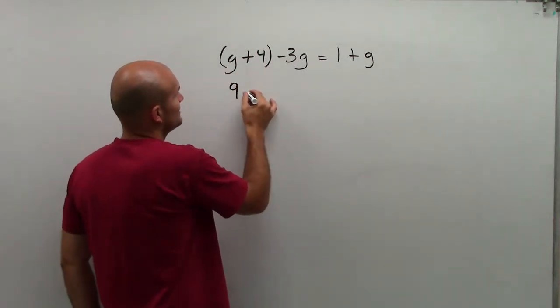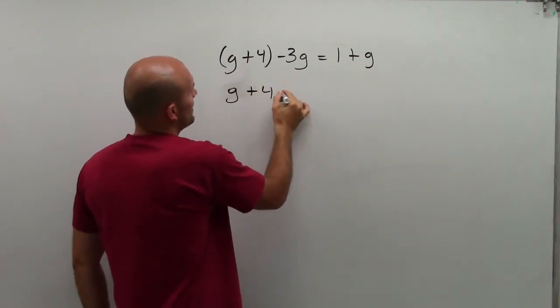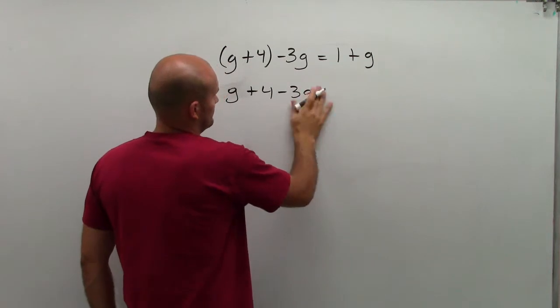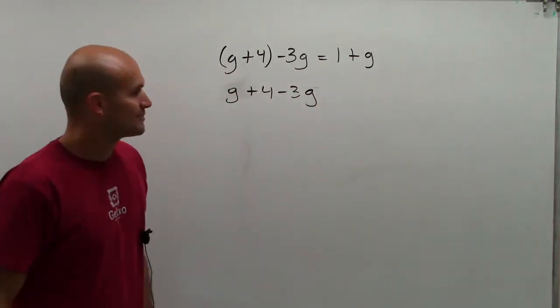I can just write this as g plus 4 minus, now I'm doing 3g, minus 3g.